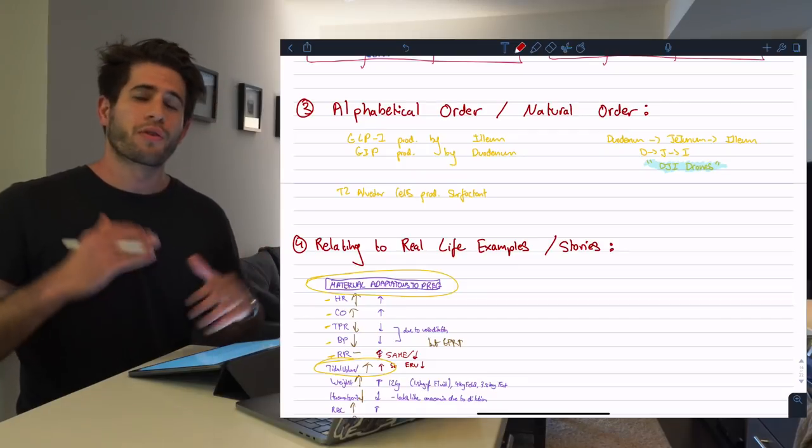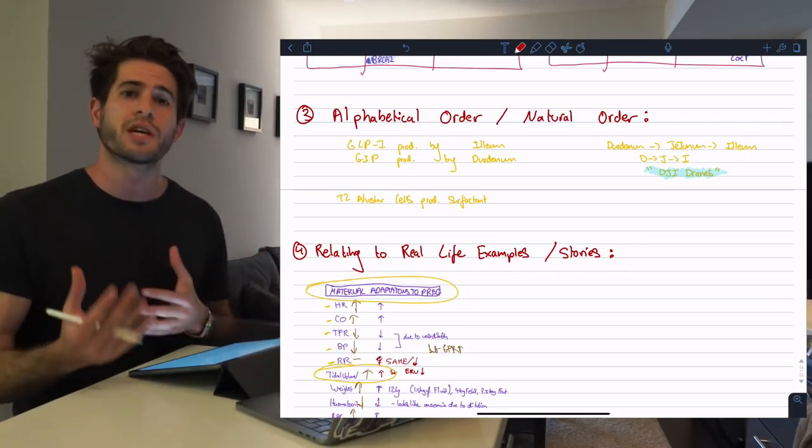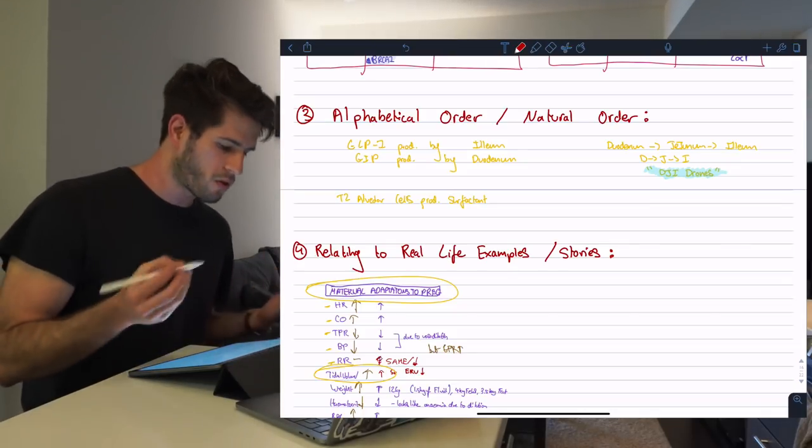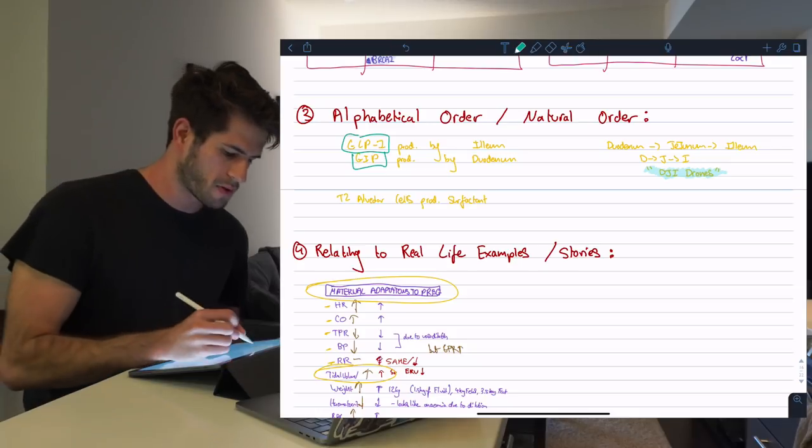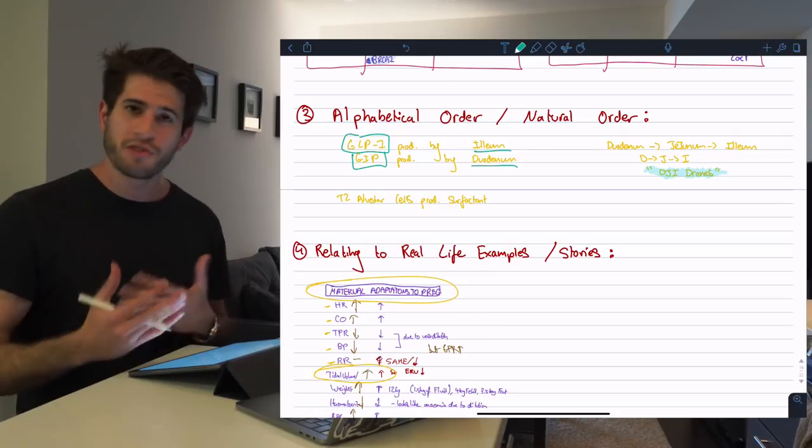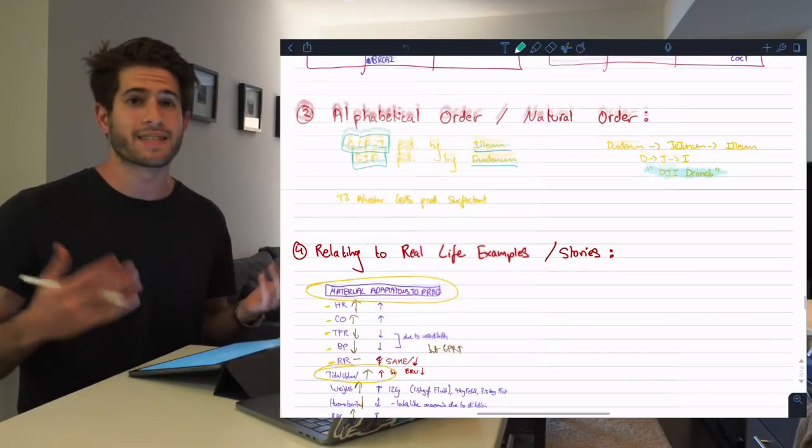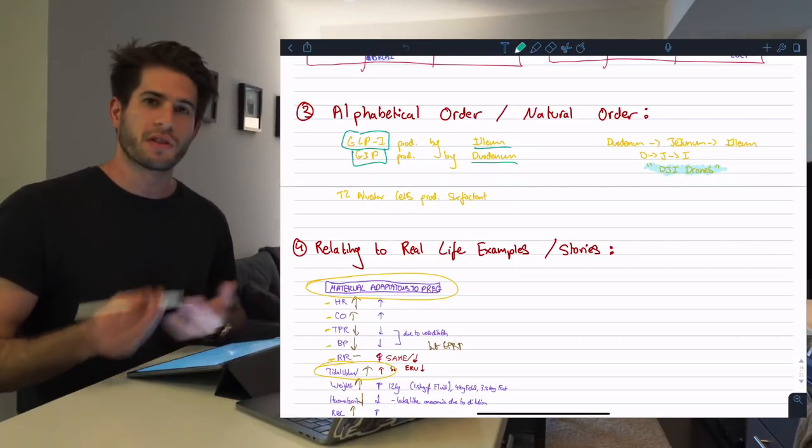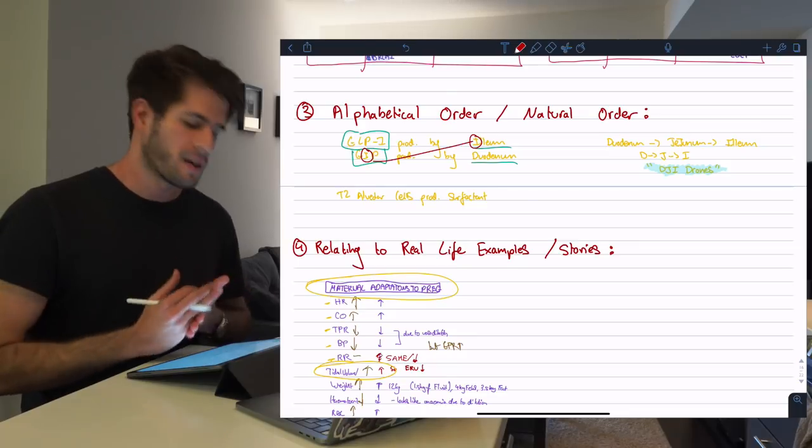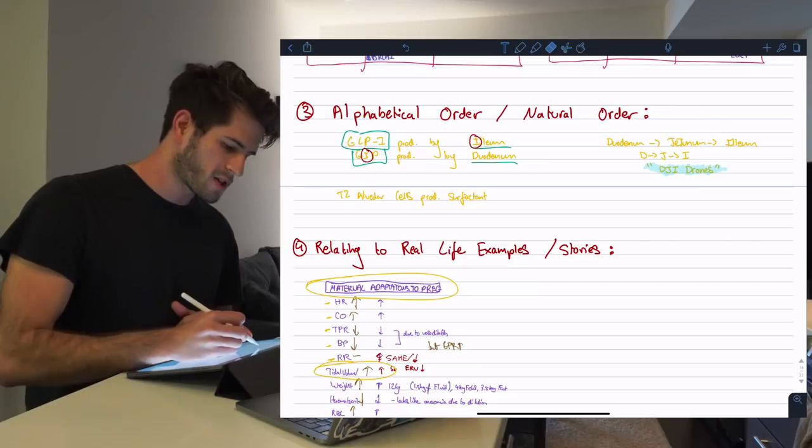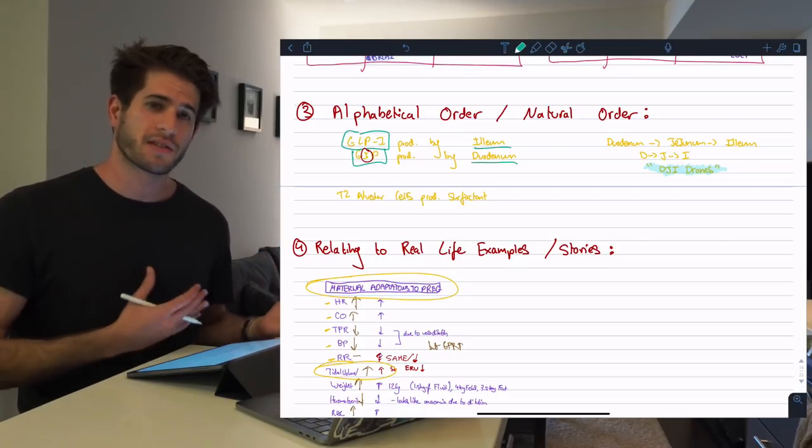Let's move on to technique number three, which is alphabetical order or the natural order of things. This is one of the first things I will look at and the first type of association I will try to make. For example, at some point I needed to remember that the hormone GLP-1 is produced by the ileum and the hormone GIP, gastric inhibitory peptide, is produced by the duodenum. This piece of information for some reason just kept tricking me over and over. The very first thing and easiest connection you could make is to think, okay, the word GIP has an I in it and ileum has an I in it. For this case, it turns out that doesn't work because GIP is made in the duodenum and vice versa.